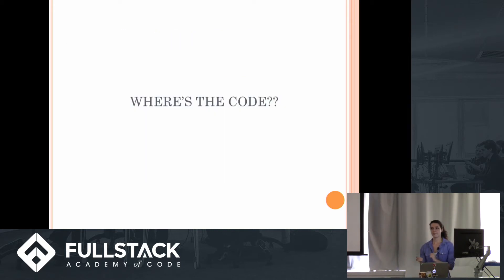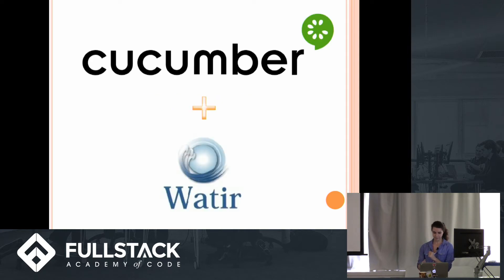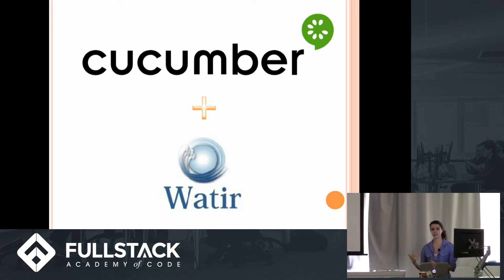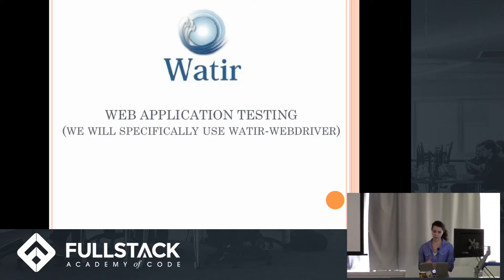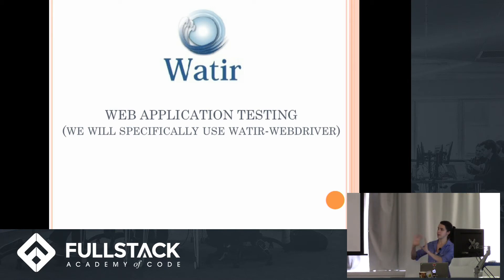So where's the code behind this? I'm going to show you how you might write a test like this using Cucumber, which is a testing framework, and Watir, which stands for Web Application Testing in Ruby. You can also use JavaScript or a ton of other languages — I'm specifically going to use Ruby because it's what I'm personally more comfortable with. I'm specifically going to use Watir WebDriver, which helps you spin up a new browser automatically for all of your tests, and you can actually see a fake robot user interacting with your browser to make sure things are working.